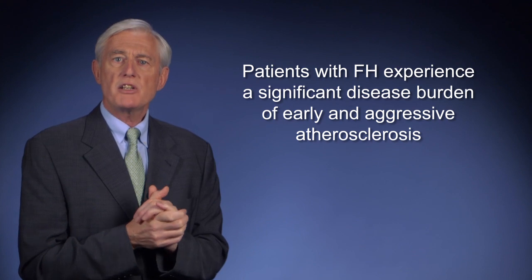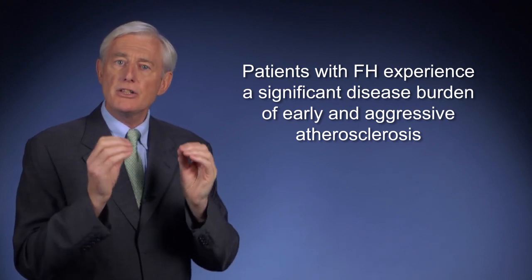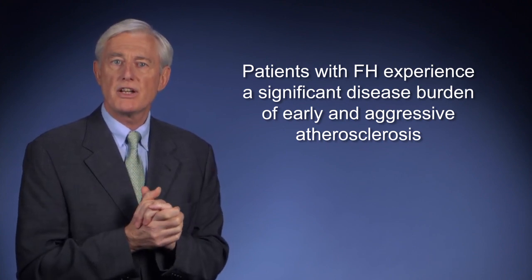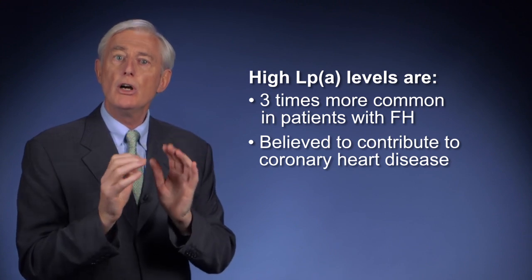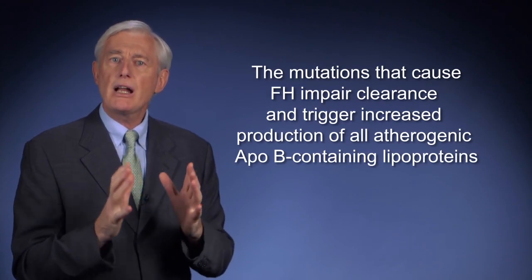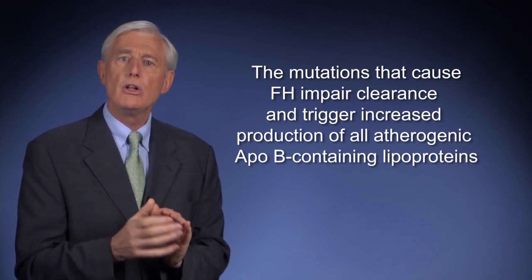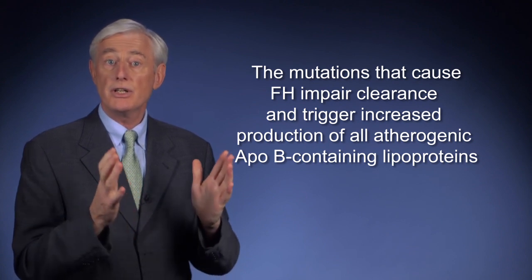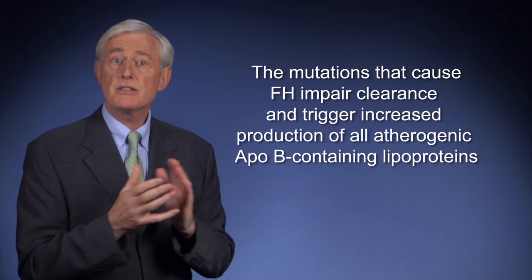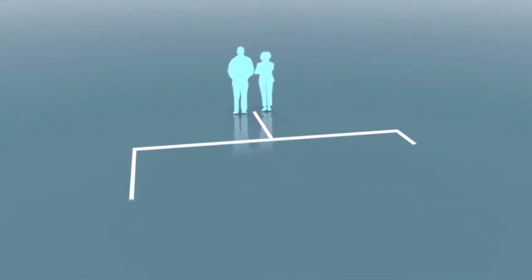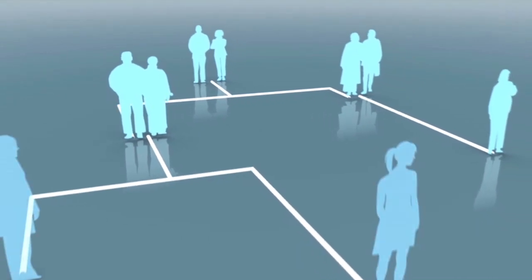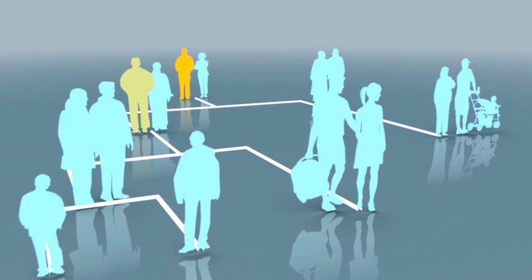Summary. Patients with the most severe forms of FH experience a significant disease burden of early and aggressive atherosclerosis and present with extreme levels of LDL cholesterol. High Lp levels are more common in these patients and are believed to contribute to premature coronary heart disease. Mechanistically, the mutations that cause FH impair clearance and trigger increased production of all atherogenic ApoB-containing lipoproteins including VLDL, IDL, LDL and lipoprotein little a. It's important to consider the role played by ApoB-containing particles particularly LDL and lipoprotein little a in FH and to look for these characteristics of this genetic disorder in your patients and in their families.